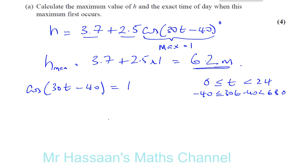So now, what we're going to do is solve this equation. So we know that 30t minus 40 is equal to the arc cosine of 1. Now, cosine theta equals 1, and theta is 0 degrees. So 30t minus 40 is equal to 0.